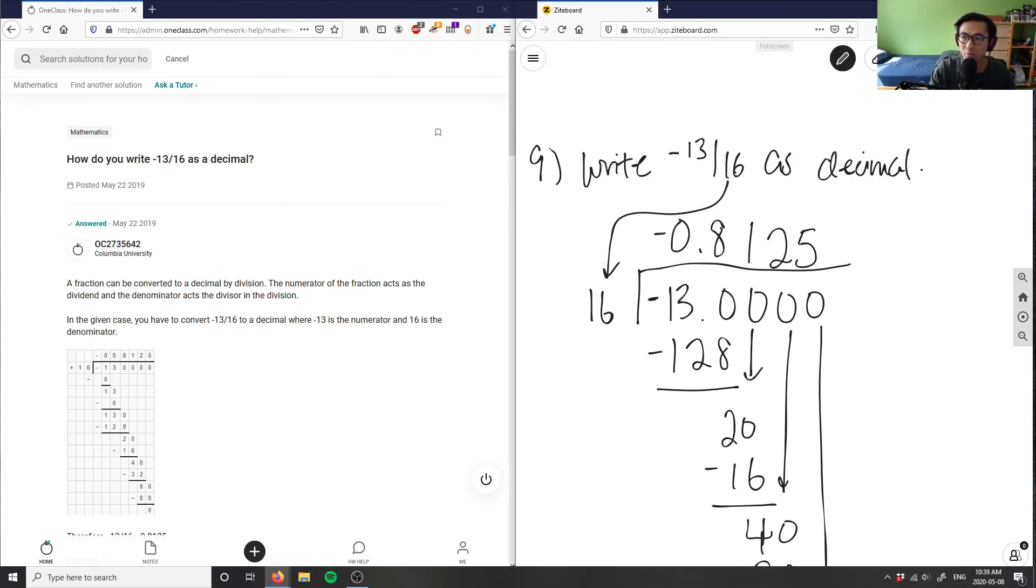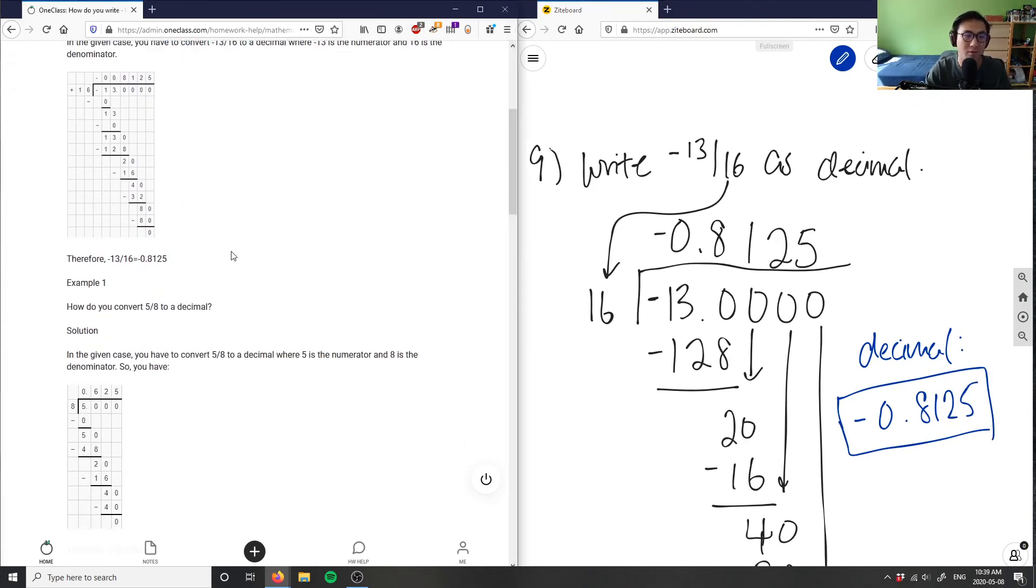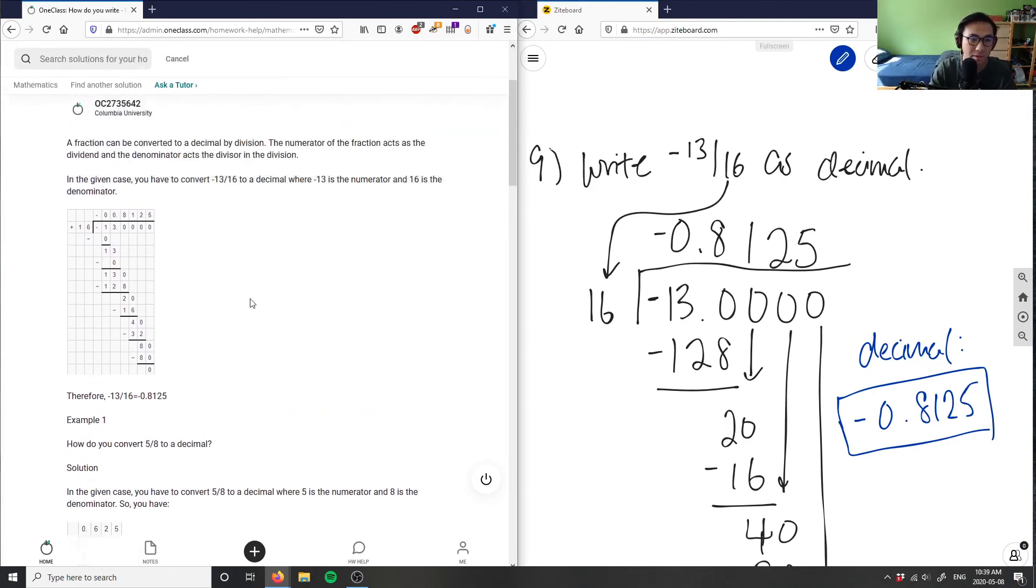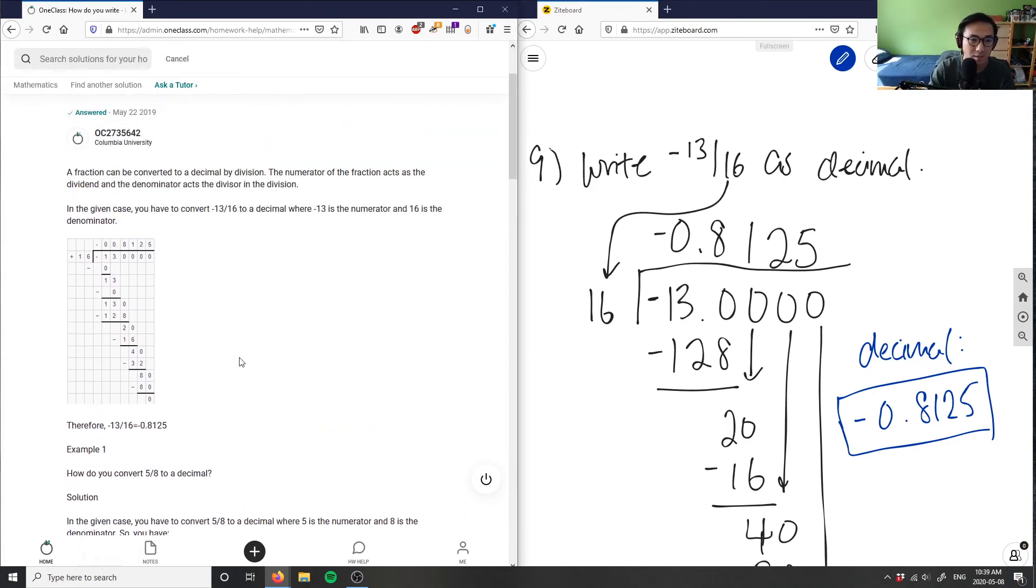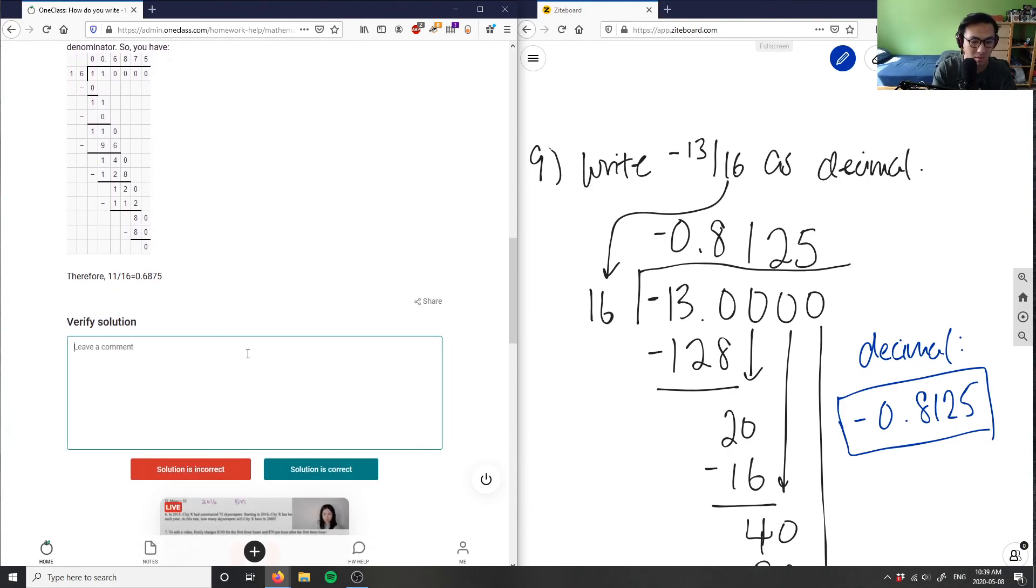So our decimal here would be negative, our decimal here is negative 0.8125. And this here is our solution for negative 13 over 16 as our decimal. So this here is the correct answer. And they did the exact same thing as I did where I did long division here. So this solution here is correct.